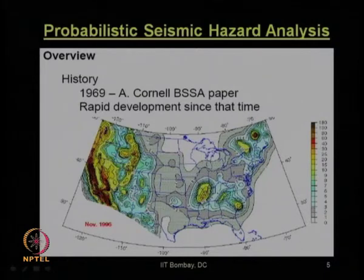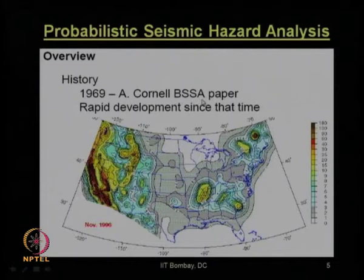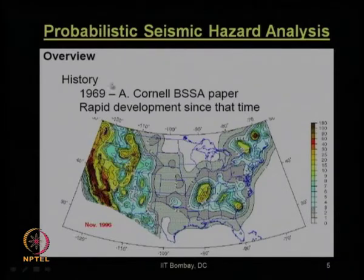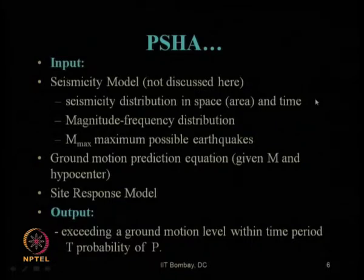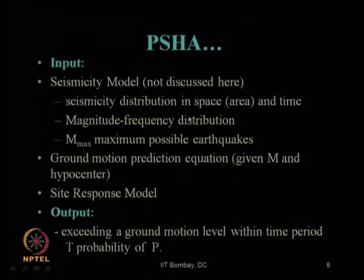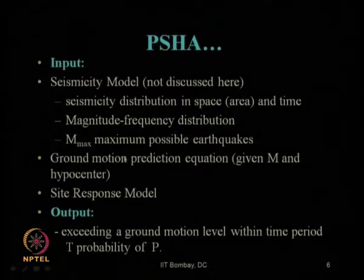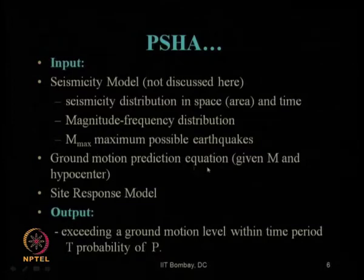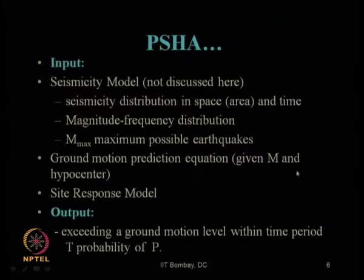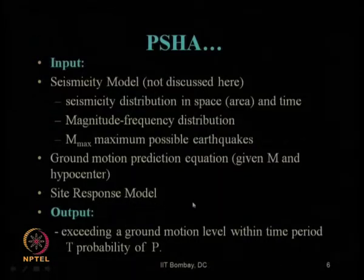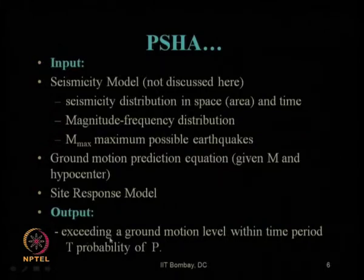In 1969, Cornell, through a Bulletin of the Seismological Society of America (BSSA) paper, first introduced the concept of probabilistic seismic hazard analysis, or PSHA. Since then, there has been rapid growth in this area and it is still continuing today. In PSHA, the input data includes the seismicity model, seismicity distribution in space and time, magnitude-frequency distribution, M-max, ground motion prediction equations (GMPEs) as attenuation relationships in terms of M and hypocenter, and a site response model. The output is the probability of exceeding a ground motion level within a time period T.